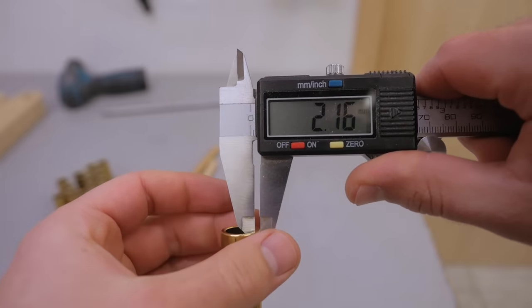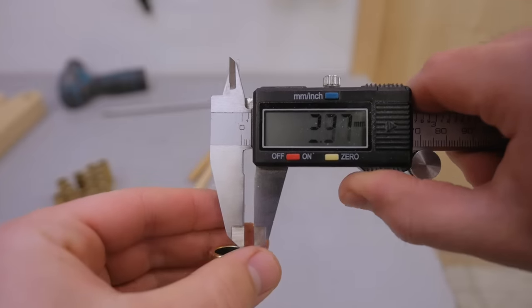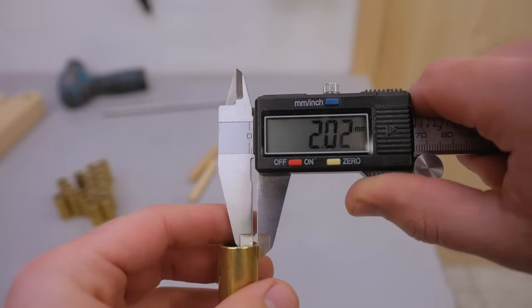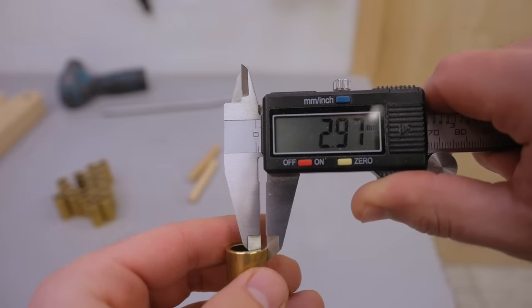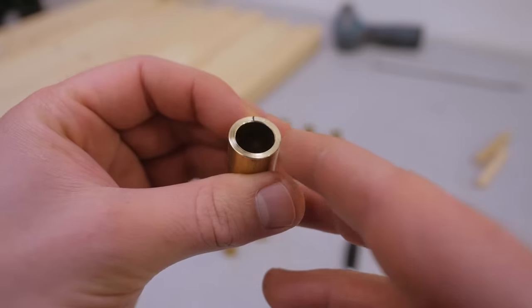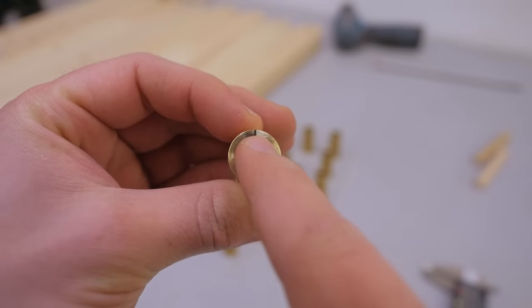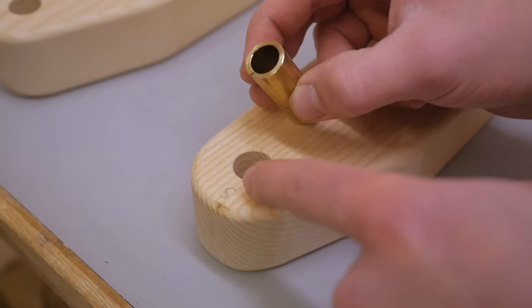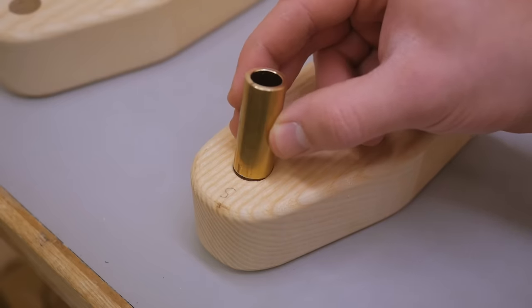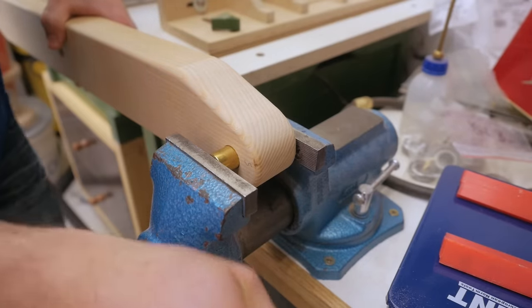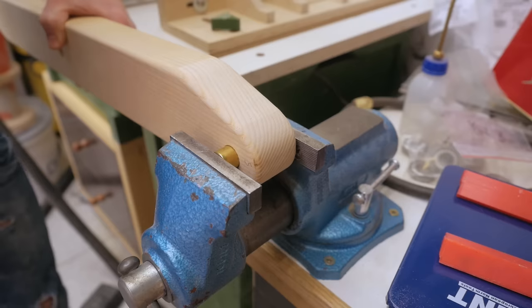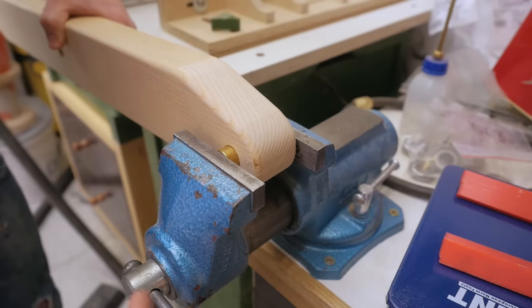Now one problem with this tube material is that the wall thickness is not consistent. But I can work around that. I have marked on every piece where the thickest part is. And when I am installing them I always make sure that the mark faces the short mark that I made previously. By doing that the errors should cancel each out in the end. At least in theory.